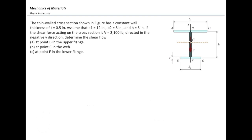In these types of shapes, web refers to the vertical element and flange refers to the horizontal elements. The shear flow equation is VQ over I. Shear flow equals shear stress multiplied by thickness, so it is thickness-independent. For this section, we need to calculate V, Q, and I. V and I are constant for a section regardless of the point of interest. Q depends on where the point of interest is, so the problem simplifies to determining Q for different points.